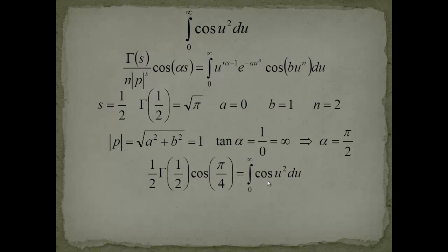Equals to the infinite integral from 0 to infinity cosinus u squared du. Now let's look at this left hand side. This is 1 half. This is square root of pi. And cosinus of pi over 4 is just square root of 2 over 2. Or 1 half square root of 2. And now you see why this happened.